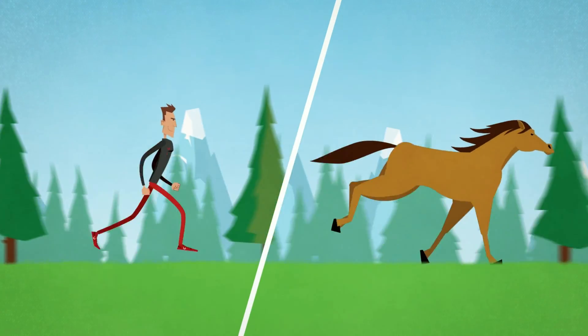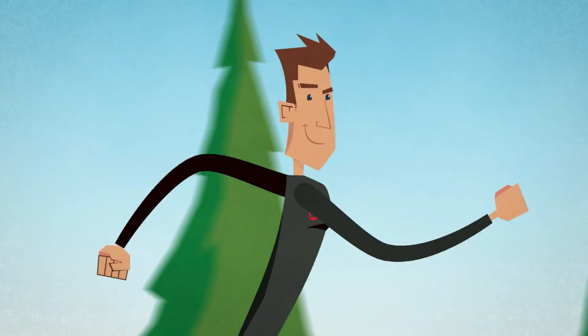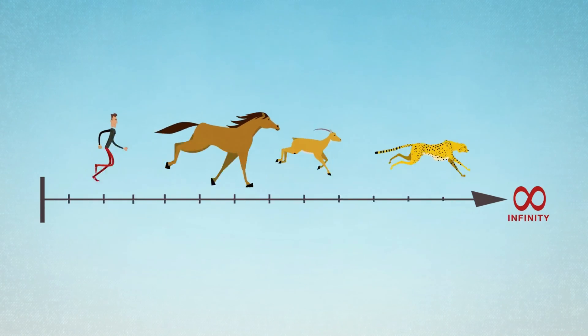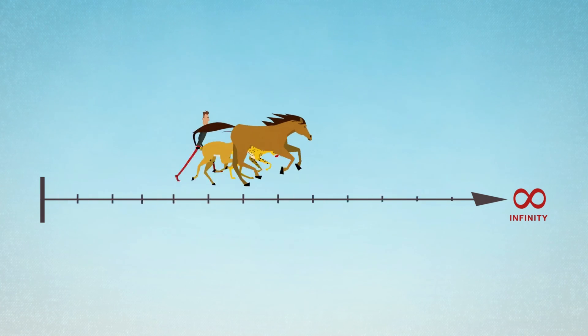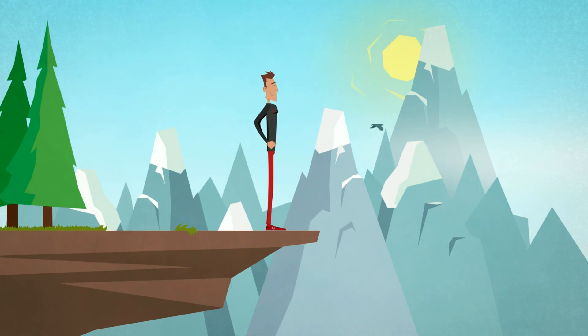Can a man outrun a horse? Impossible, you think. But the truth is he can, and even more surprisingly, over an unlimited distance, humans can outrun any animal, even a cheetah. We're the best endurance runners in the animal kingdom.